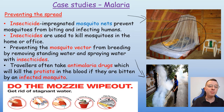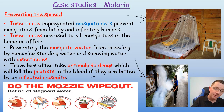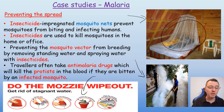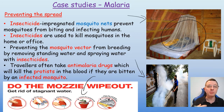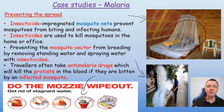We can also try and prevent the mosquito vector from breeding by removing standing water and spraying water with insecticides. Here we have a poster from Singapore encouraging residents to get rid of any stagnant or standing water where mosquitoes like to breed and produce their larvae. Therefore there are fewer breeding sites and fewer mosquitoes in the environment to transmit the plasmodium parasite and pathogen.